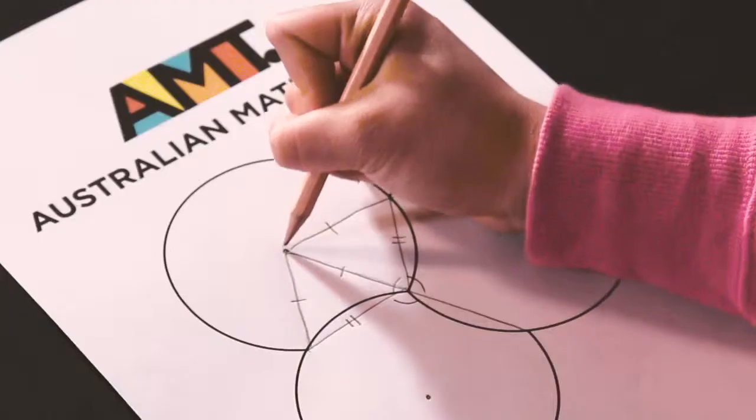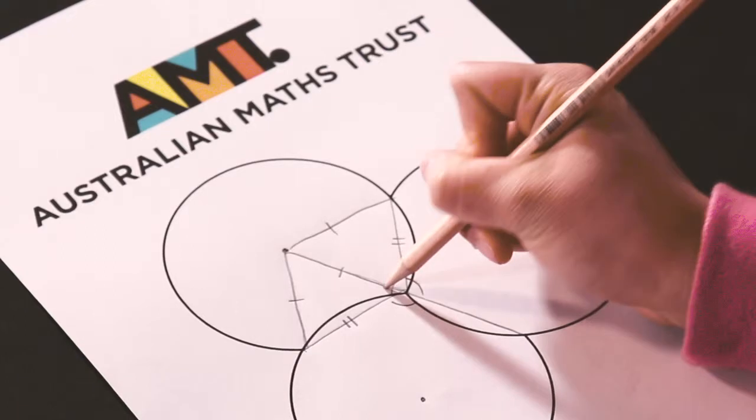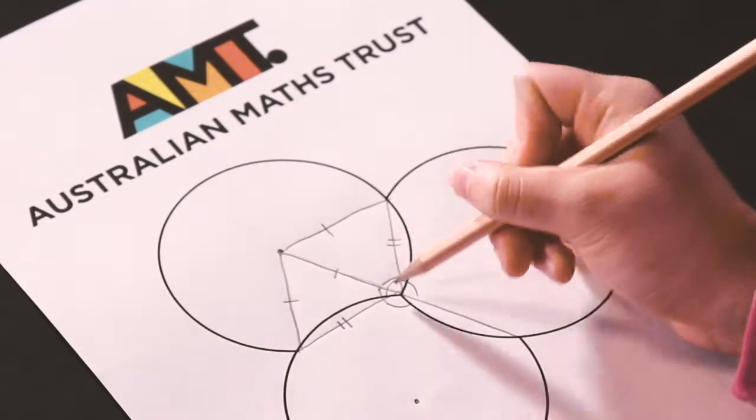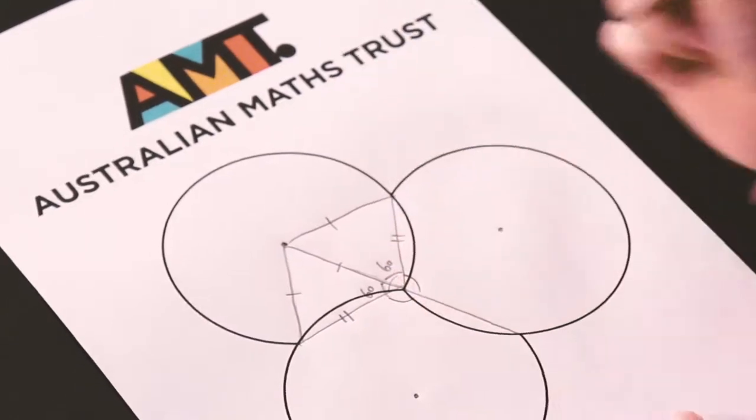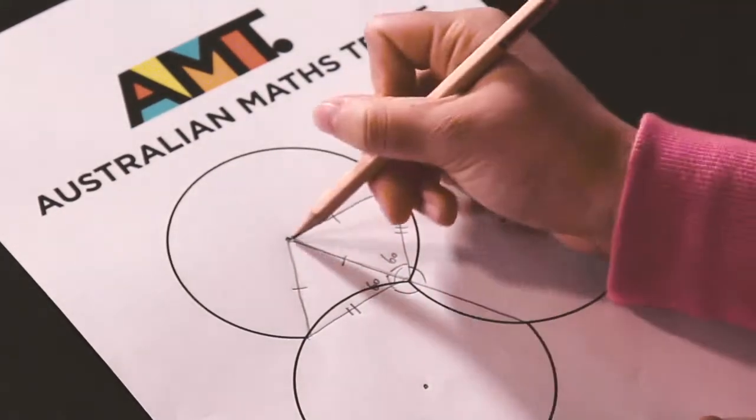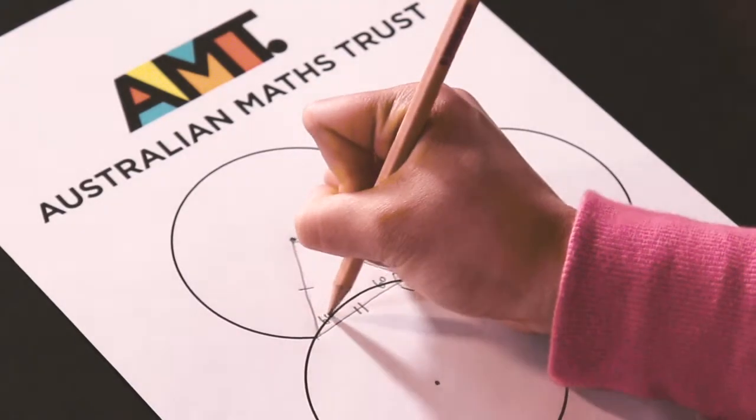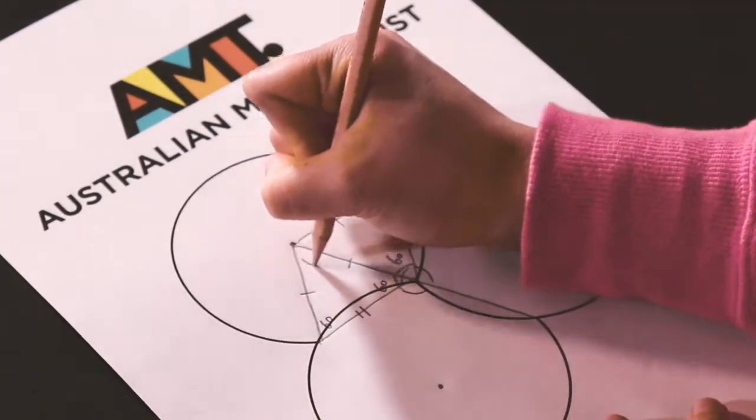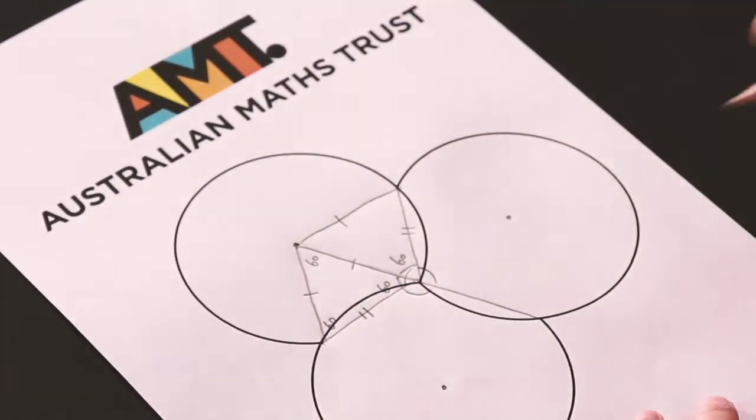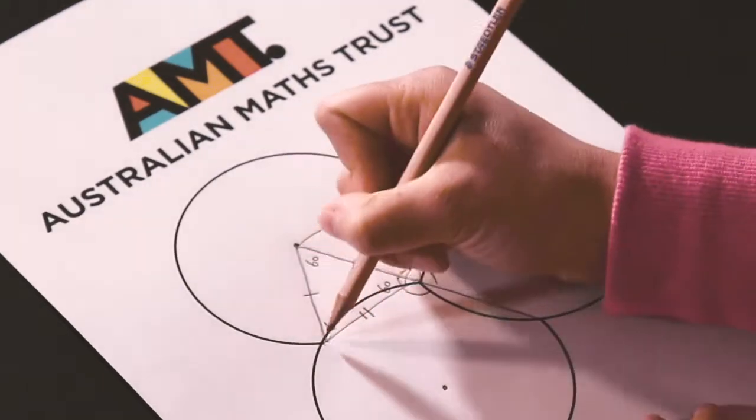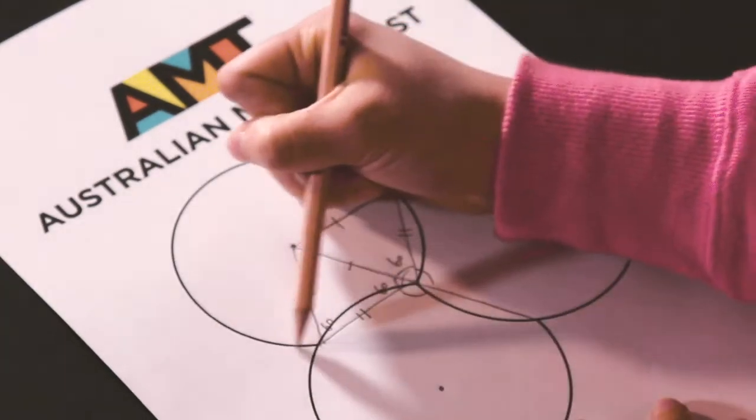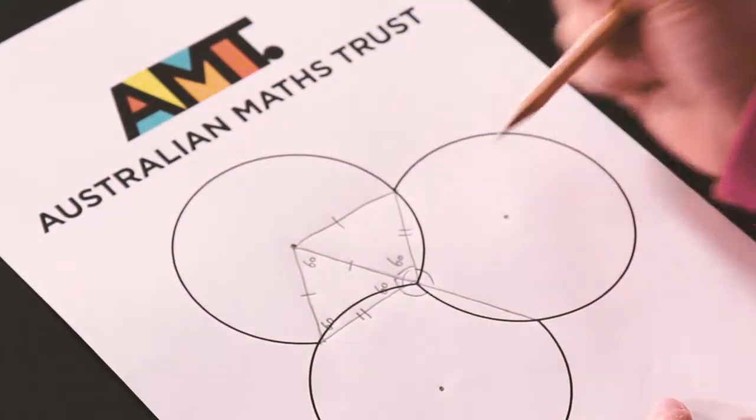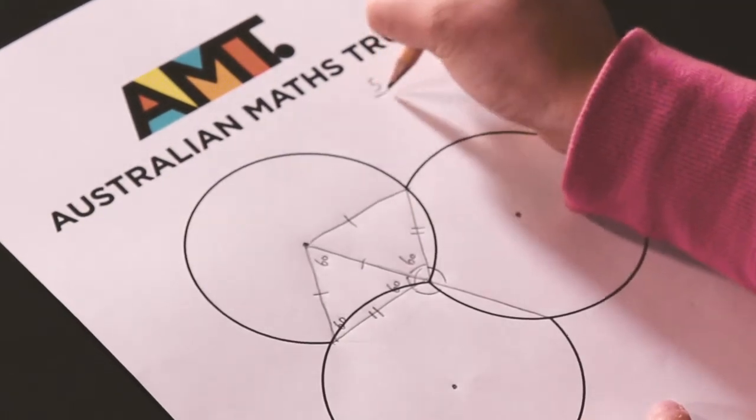We also have that since this is the center, these two angles are equal, and because this angle is 120, these must both be 60 degrees. Since this is an isosceles triangle, this is also 60 degrees, so this angle here must be 60 degrees. This means that the missing part of the arc is one sixth of the total circle circumference, and that means that this visible arc length is five sixths.